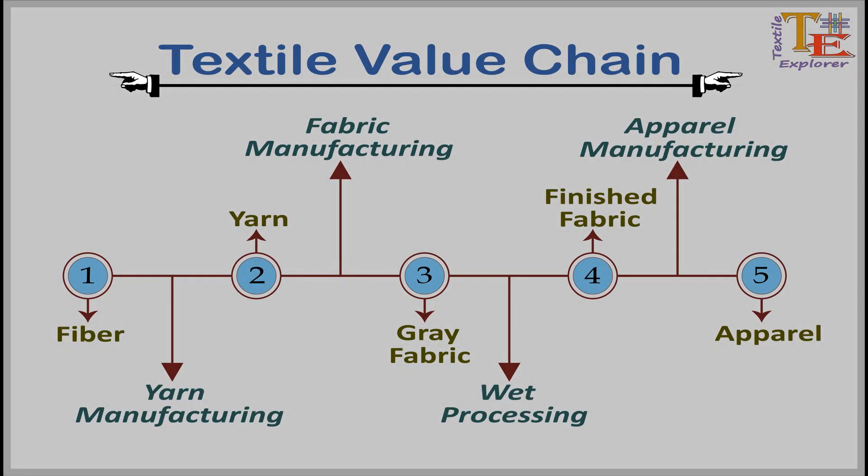First, let's look at the flowchart of textile manufacturing — we can also call it the textile value chain. In the flowchart we can see that fiber is the basic raw material, and by processing this fiber in four steps we can get our desired apparel. Those steps are yarn manufacturing, fabric manufacturing, wet processing, and apparel manufacturing. The upcoming slides will give a transparent idea about this process.